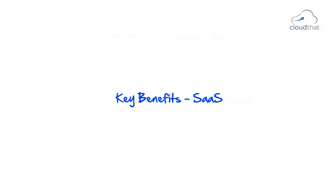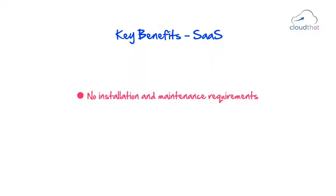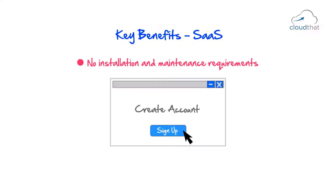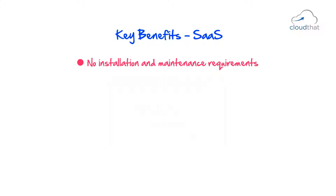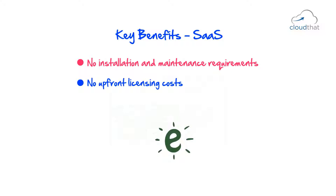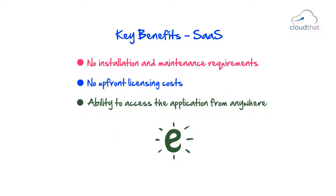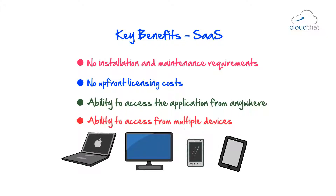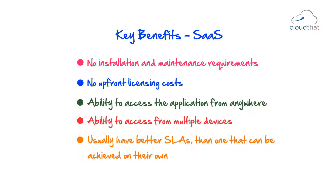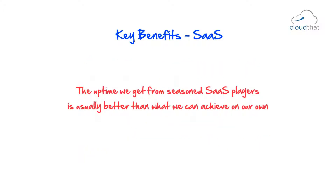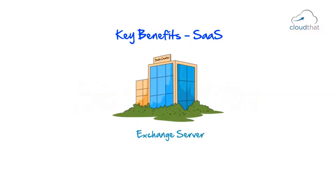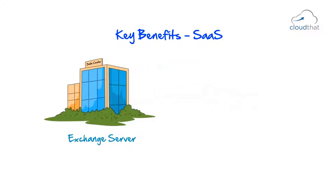Key Benefits of Software as a Service: There is no installation and maintenance required — you just create an account and start using the software. There are no upfront licensing costs. SaaS gives you the ability to access the application from anywhere with just an internet connection, and from multiple devices, whether Mac or PC, mobile or tablet. SaaS products usually have better SLAs than what can be achieved on your own. For example, if you are running an exchange server in your own data center, you can almost never match the availability of similar SaaS products like Google Apps or Microsoft Exchange Online.